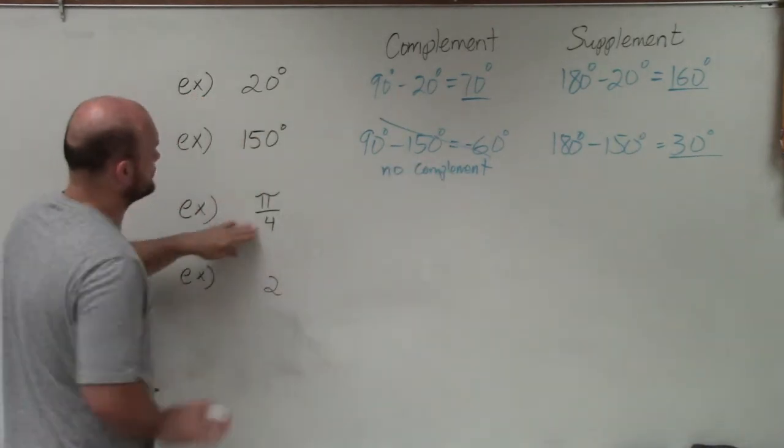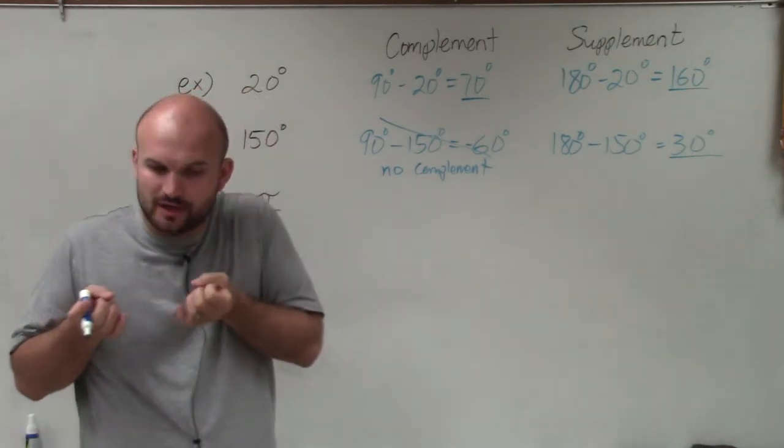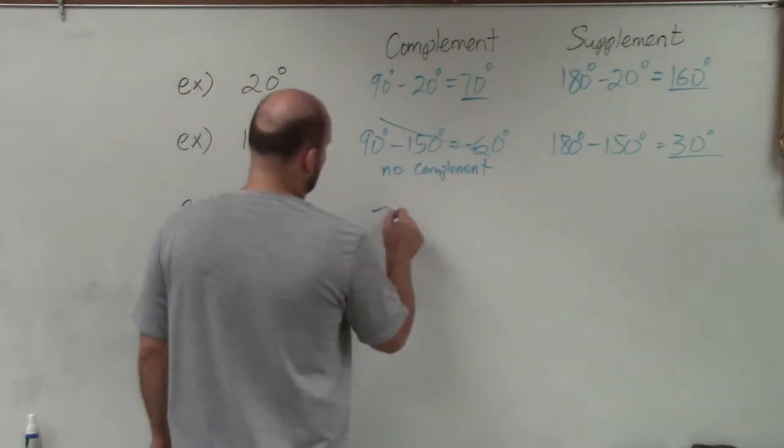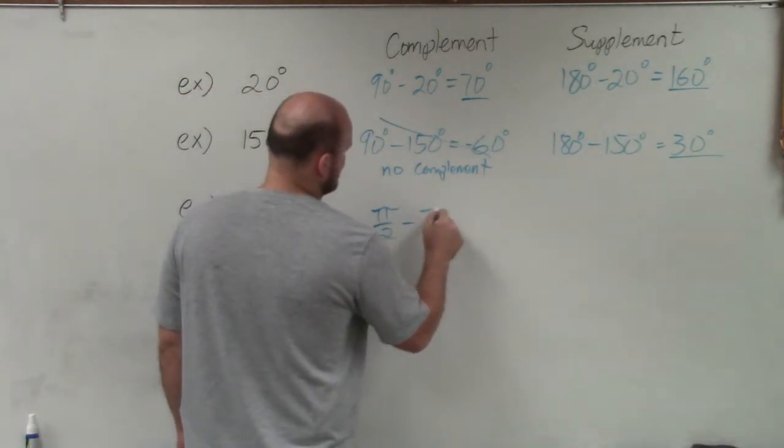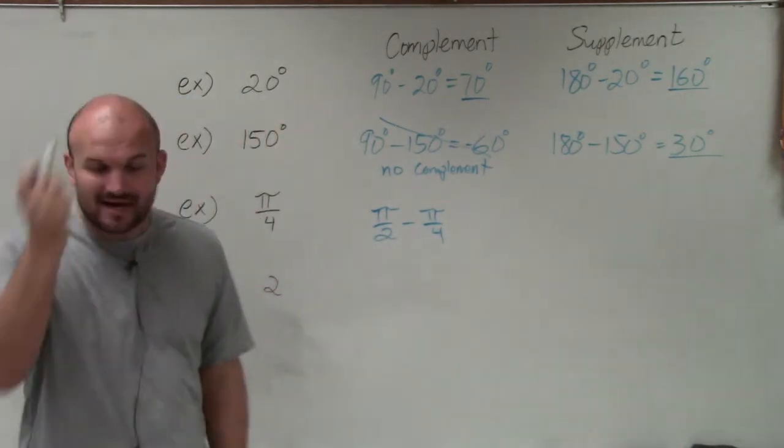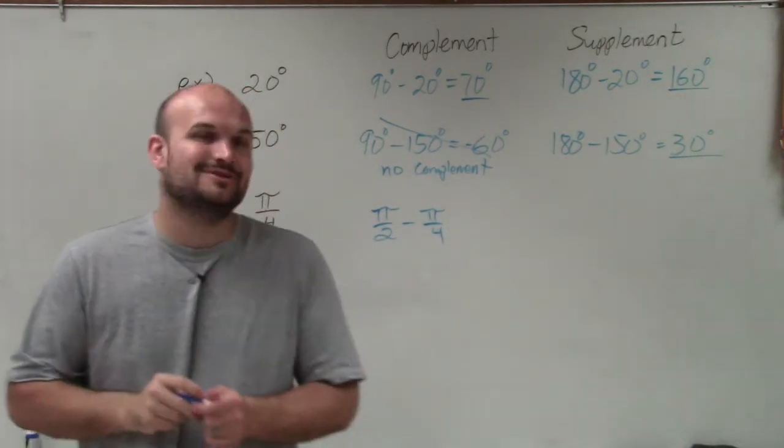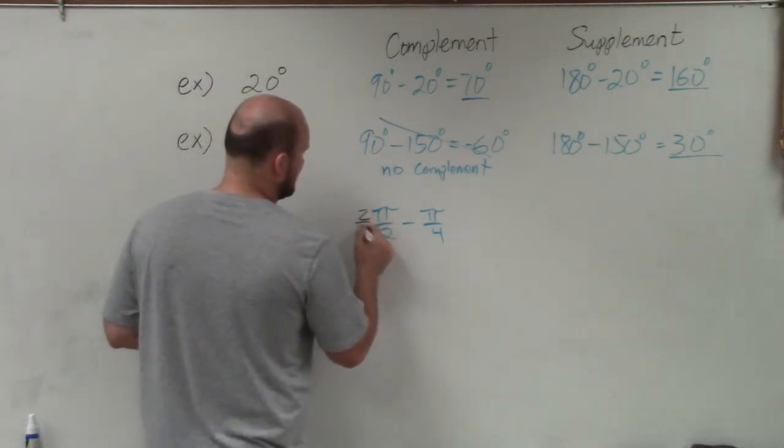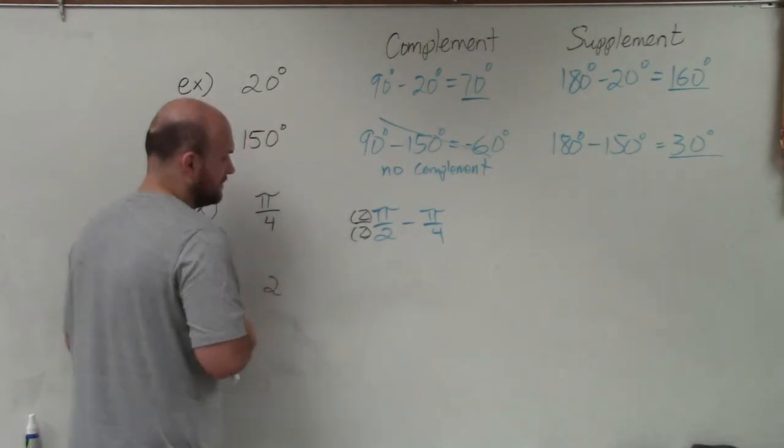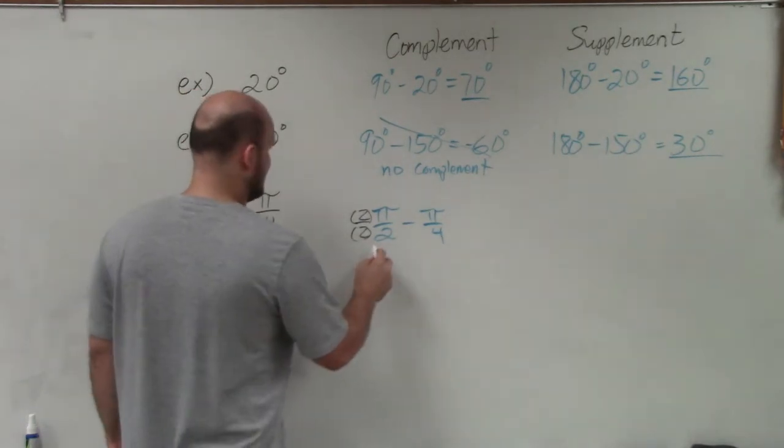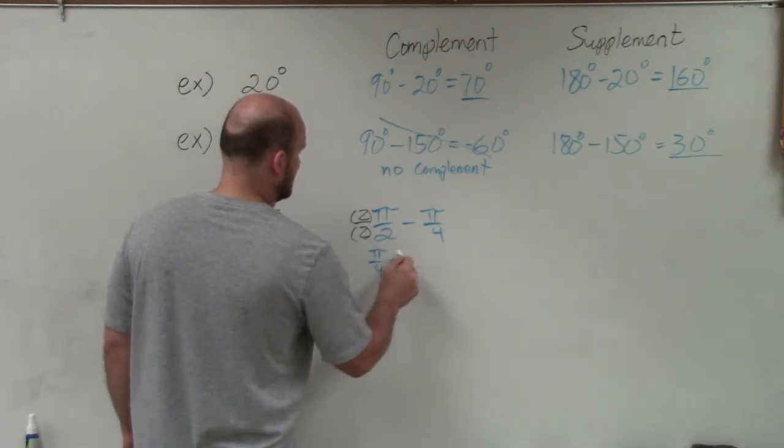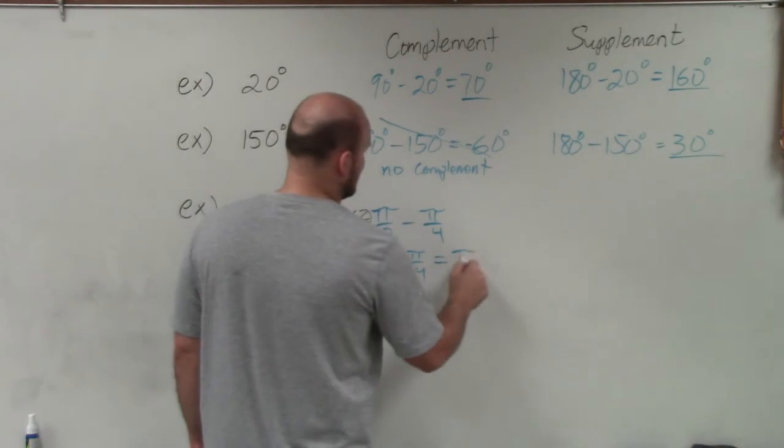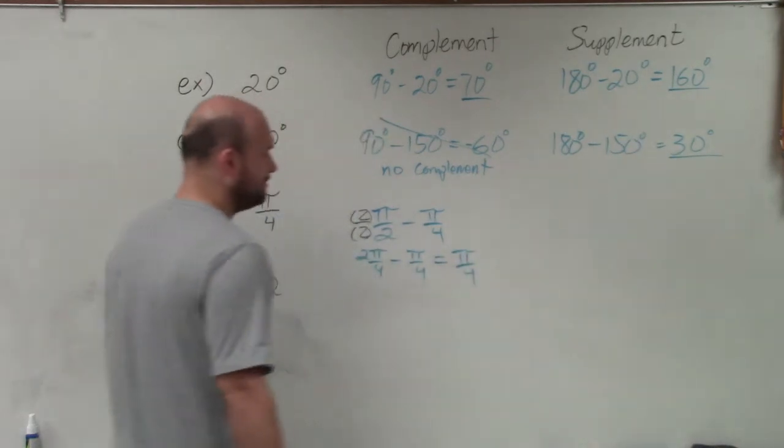Now let's go over to radians. The equivalent form of 90 degrees in radians is π/2. So therefore I'm going to have π/2 minus π/4. Usually students do not like this because now I'm introducing fractions. Remember when you're subtracting fractions you got to have the same denominator. So I'll multiply by 2/2. Therefore I have 2π/4 minus π/4, which now you can see my complement is actually going to be π/4.